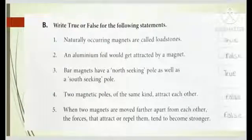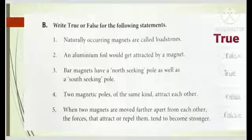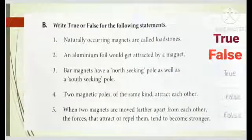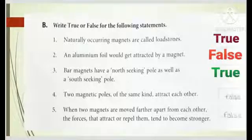Now get ready to do true, false. And first one is naturally occurring magnets are called loadstones. Answer is very correct. So here we can write true. Next one, an aluminum foil would get attracted by a magnet. Answer is false because aluminum foil is a non-magnetic material. Number three, bar magnets have a north-seeking pole as well as a south-seeking pole. Answer is, can you guess? True because a magnet has two poles. Fourth one, two magnetic poles of the same kind attract each other. Is it correct? No, this is false.